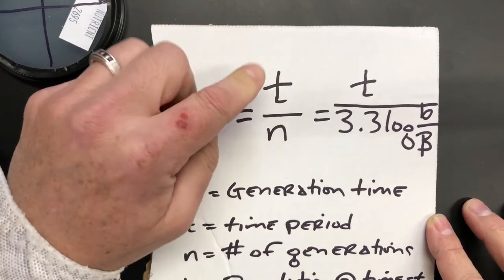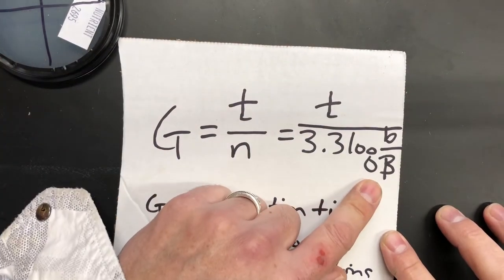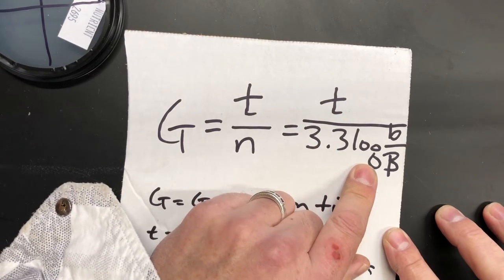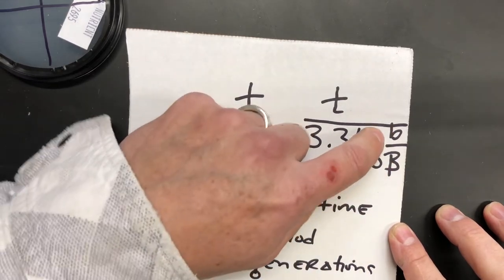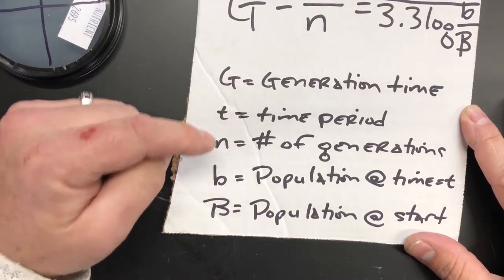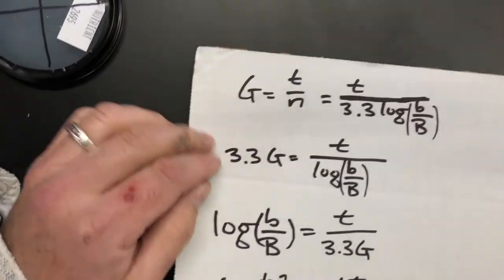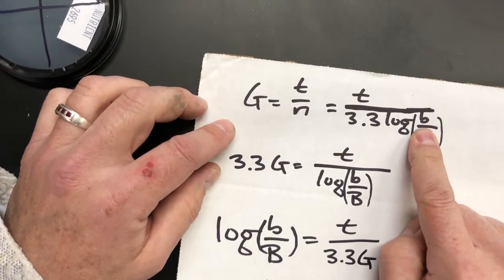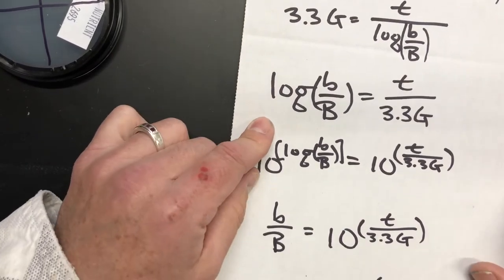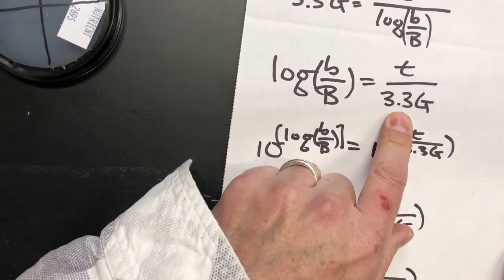We're not gonna worry about the number of generations too much here because what we're really interested in is this side. So G equals time divided by 3.3 times the logarithm base 10 of our population at time T divided by our starting population. Now this is simple algebra and I'll go through it with you real quick. So we want to isolate B, our population at our end time. We're gonna multiply both sides by 3.3. We're gonna bring log B over B to this side, put 3.3G under T.